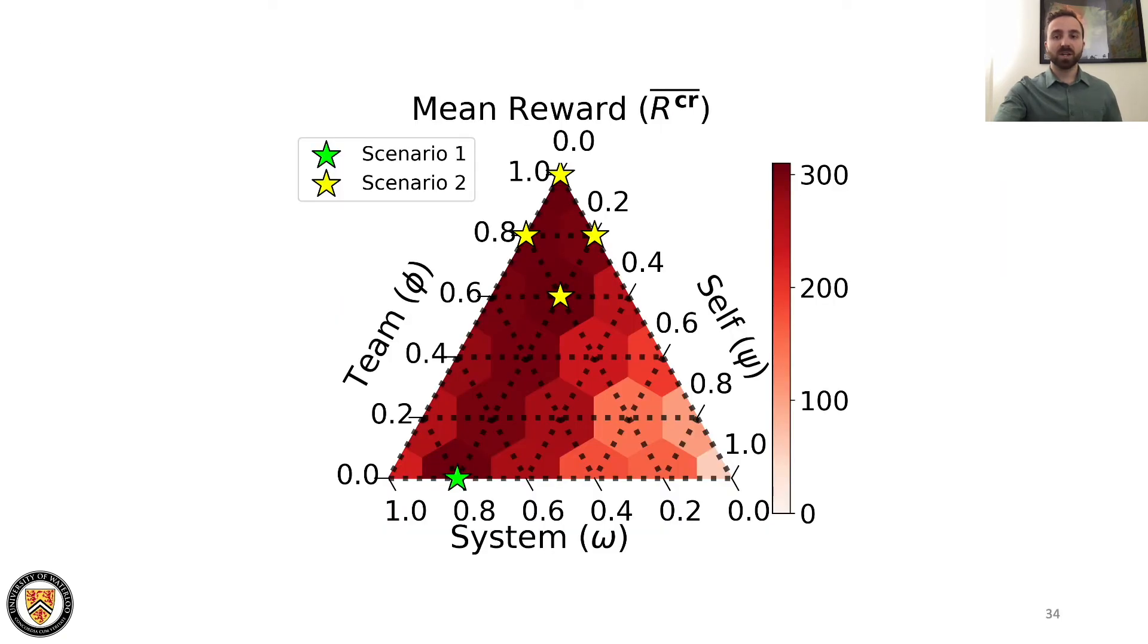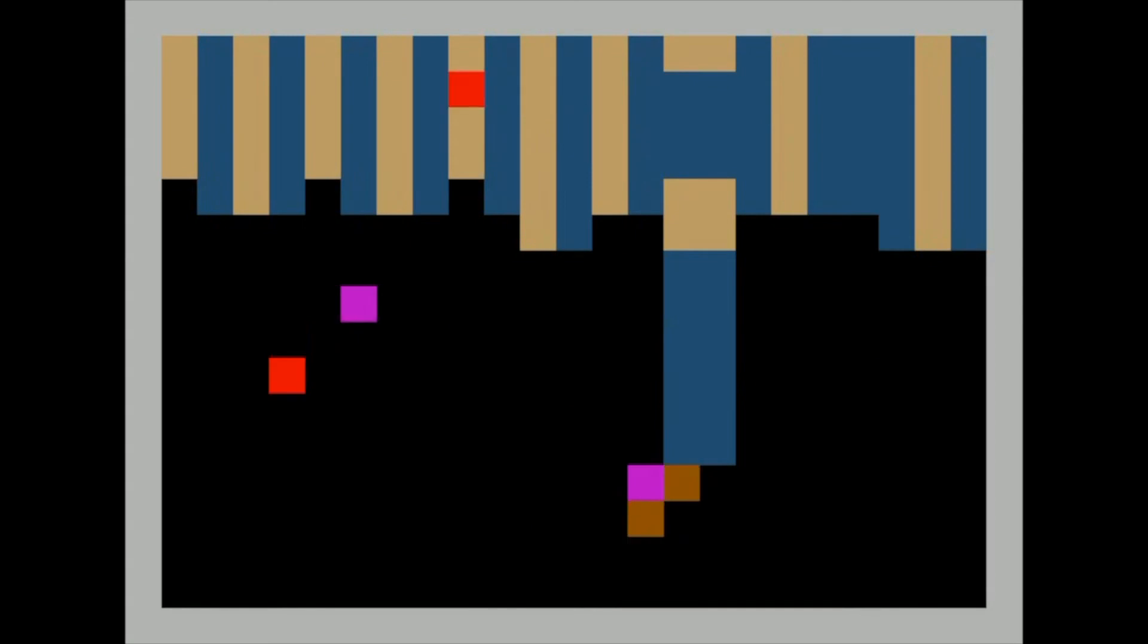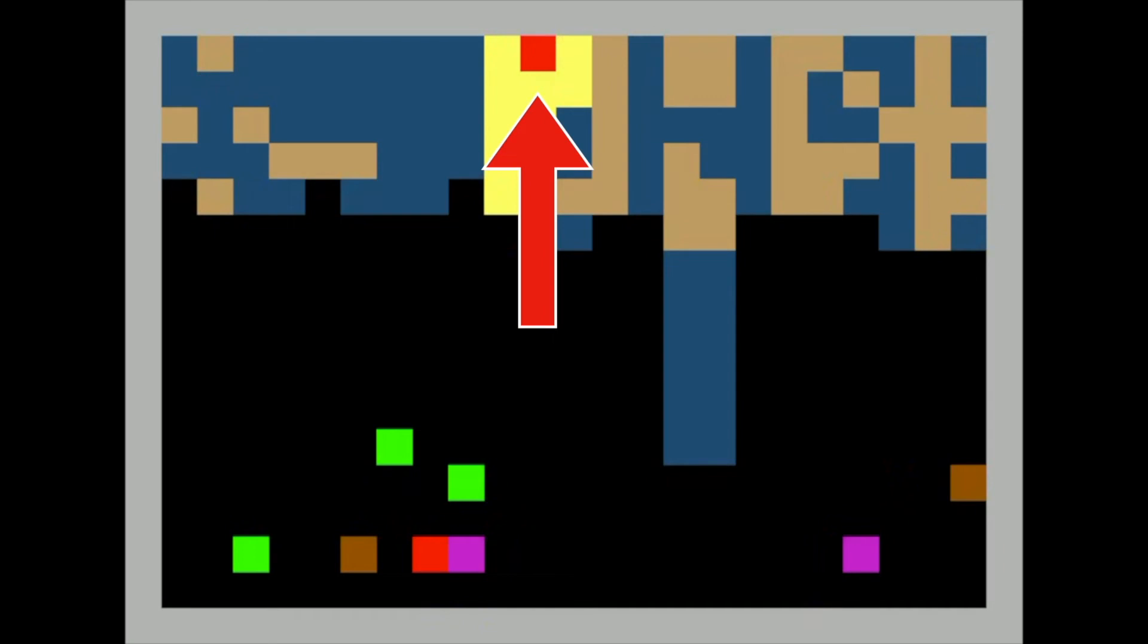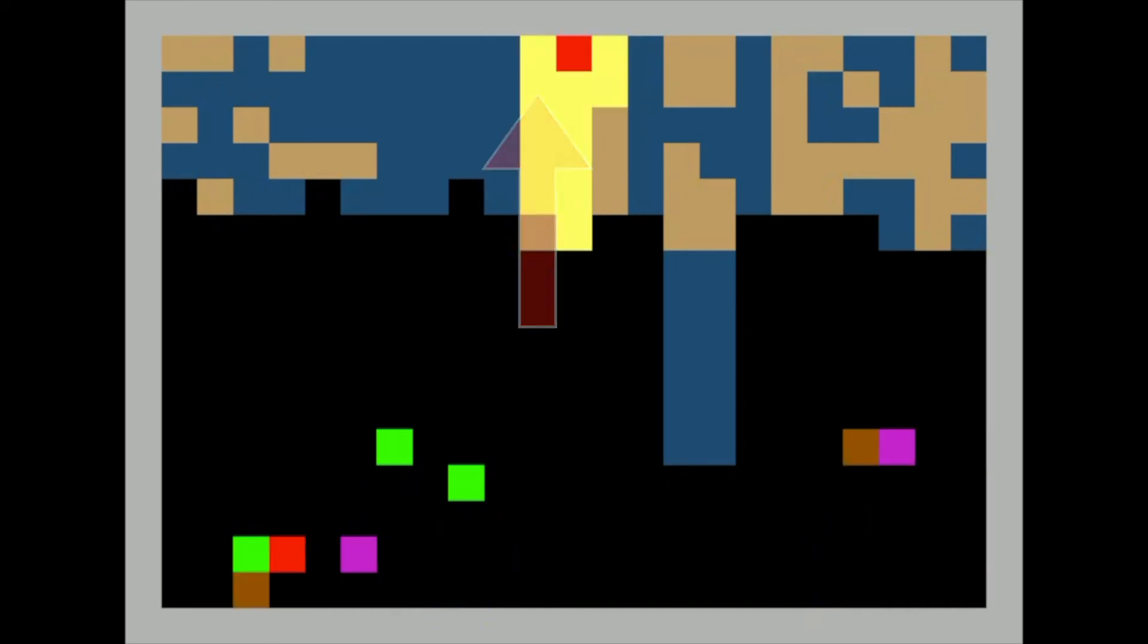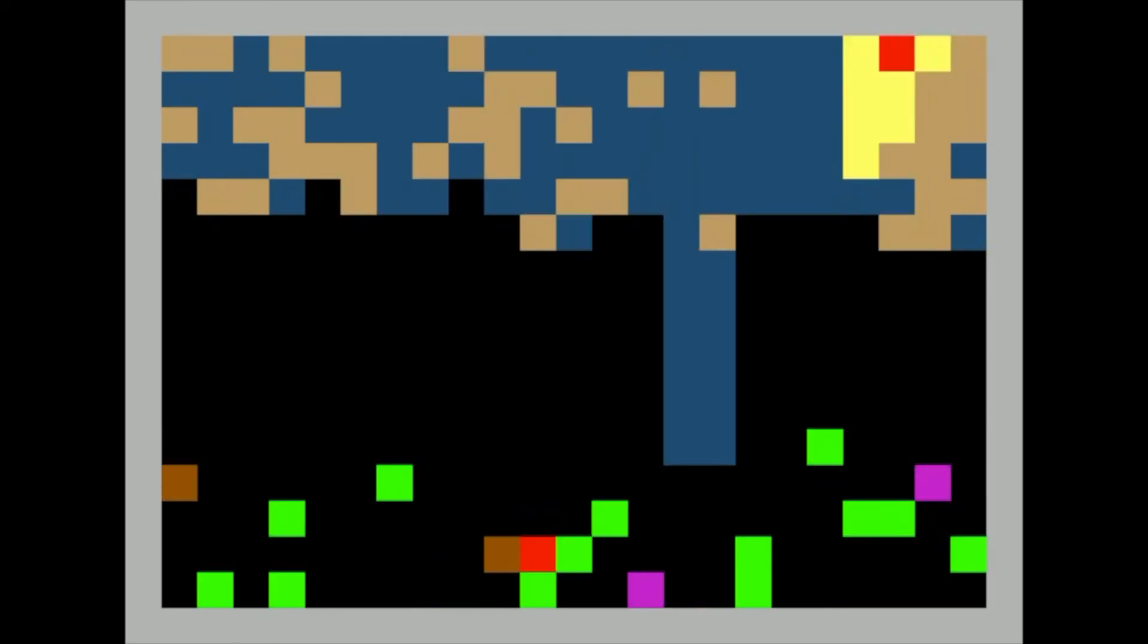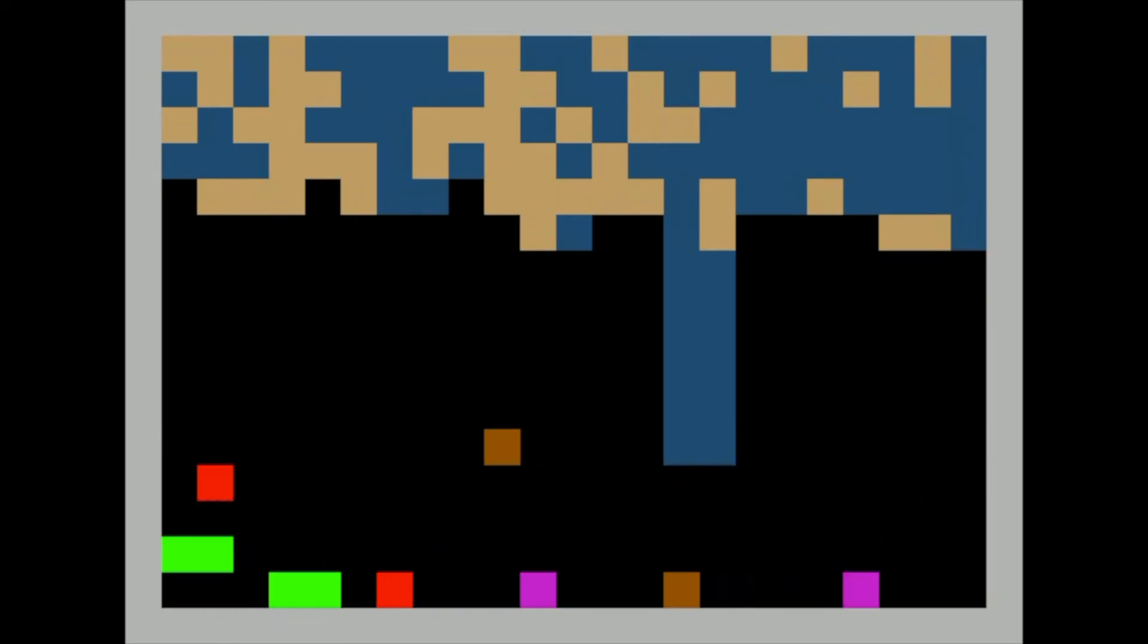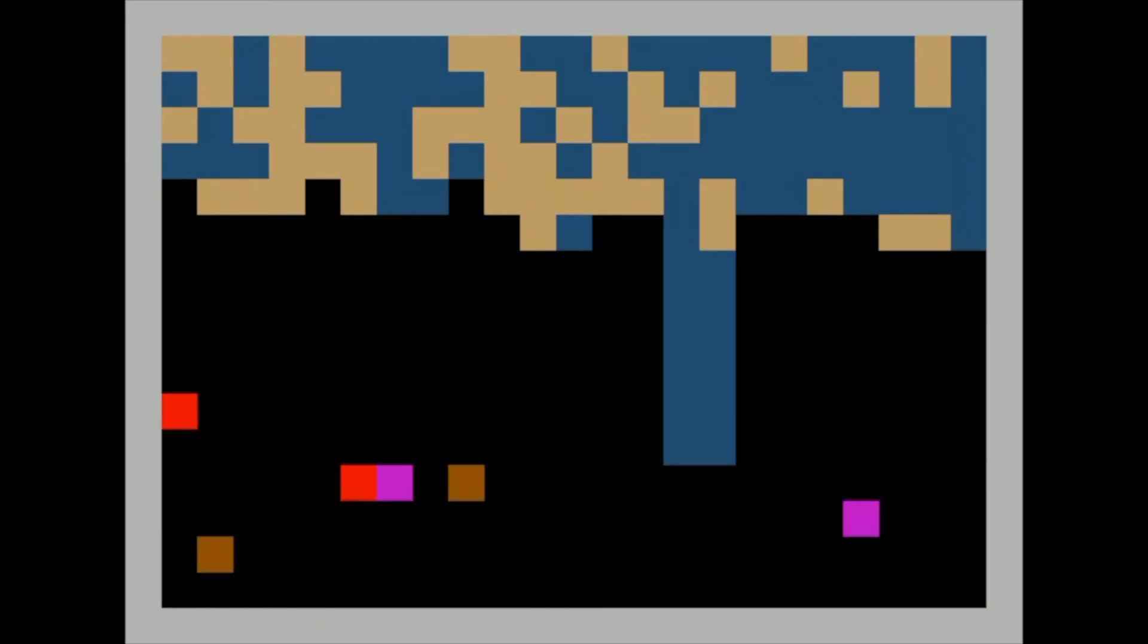To initially understand how credo impacts behavior, we first show the fully self-focused scenario, representing the original dilemma with self-interested agents. In this scenario, we observed that only one agent learns to clean the river. This makes only a few apples grow in the orchard, which are often quickly snatched up by the other five agents that have learned to free ride. This leads to pretty low mean population reward overall.